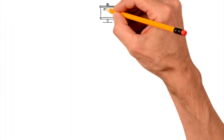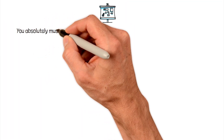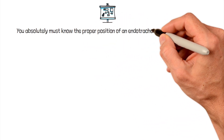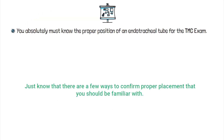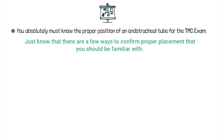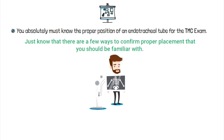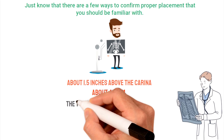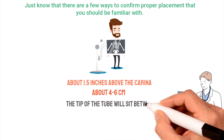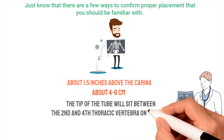First and foremost, you absolutely must know the proper position of an endotracheal tube for the TMC exam, because you will see questions about it. There are a few ways to confirm proper placement that you should be familiar with. When looking at a chest X-ray, a properly positioned ET tube should appear about 1.5 inches above the carina, which more specifically is about four to six centimeters. This means the tip of the tube will sit between the second and fourth thoracic vertebrae on the X-ray.